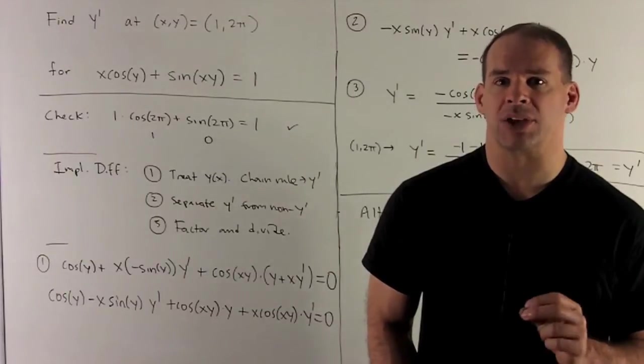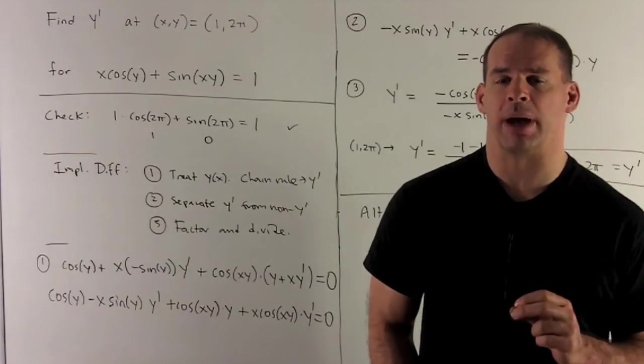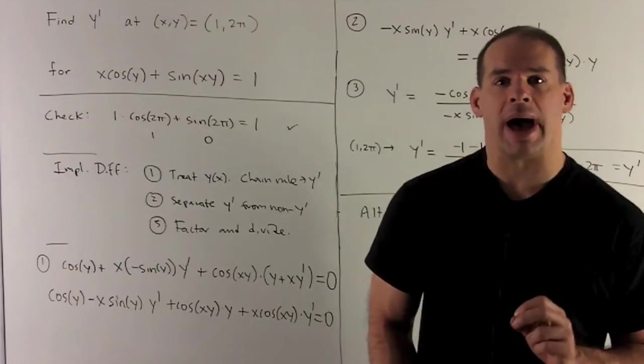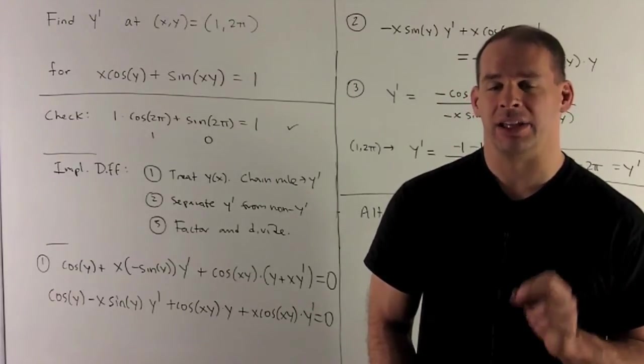Find y prime at the point (x,y) equal to (1, 2π) for the equation x cos(y) plus sin(xy) equal to 1.